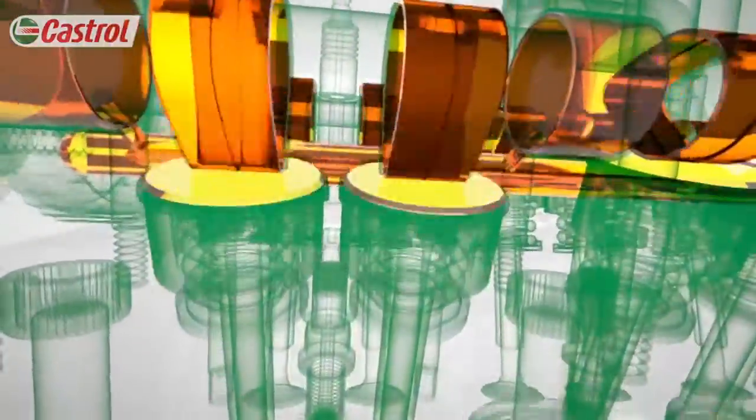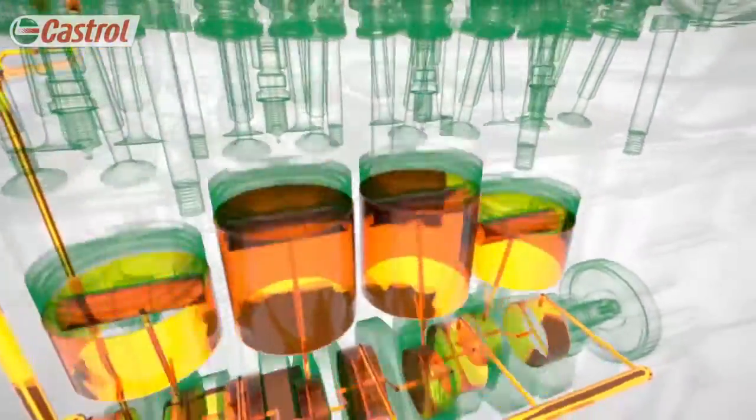Loads in the valve train are the highest in the engine. This is where the oil experiences the most stress. To avoid friction and damaging wear, these fast-moving metal components must be lubricated. The oil is the only thing preventing metal-to-metal contact.